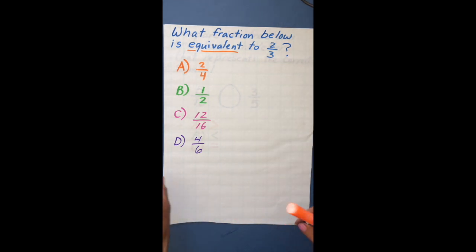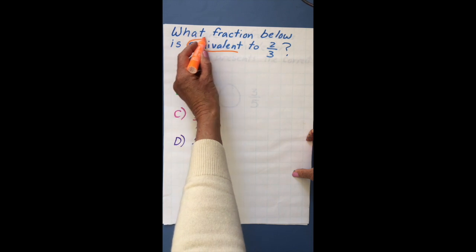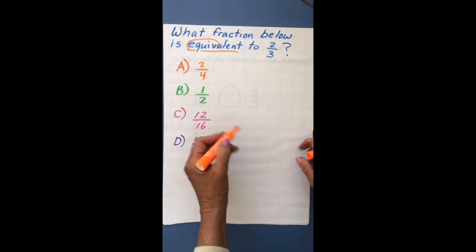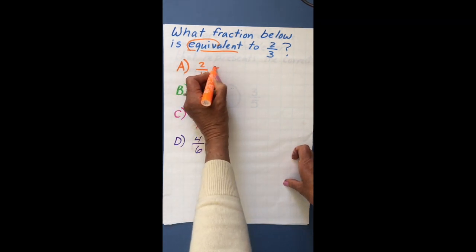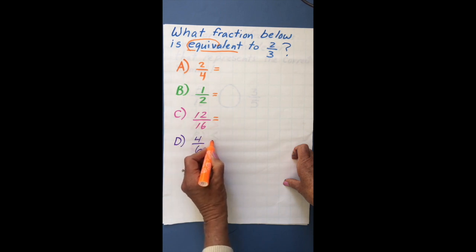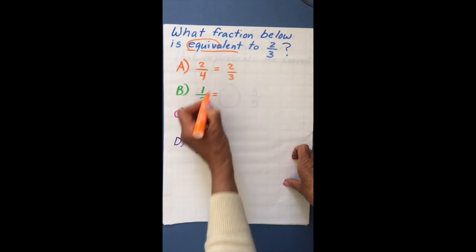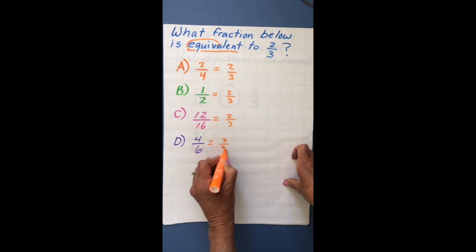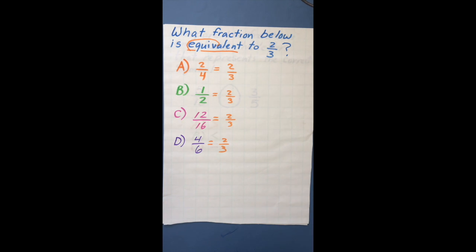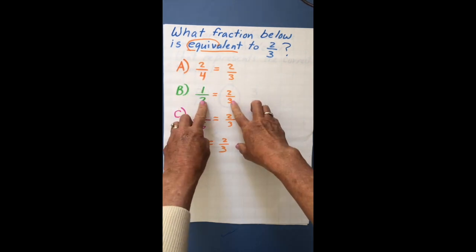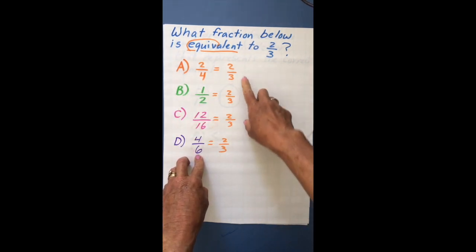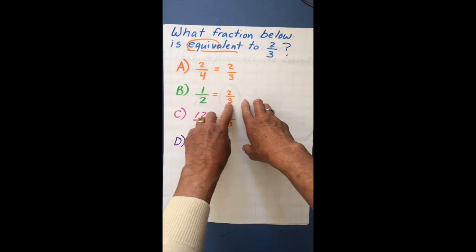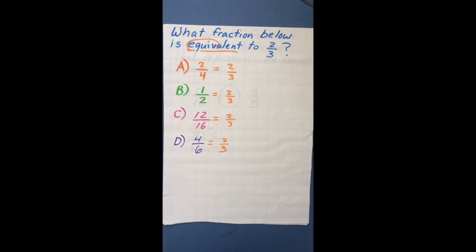Now let's solve the problem. When you see the word 'equivalent,' notice it contains the word 'equal.' So I'll place an equal sign between each answer choice and 2 thirds to test which equation is correct. We know fourth grade is about matching the denominator — 'adding and subtracting is plain to see, you match the bottoms perfectly.' These aren't matched, so when comparing fractions we want to make the bottom numbers the same.